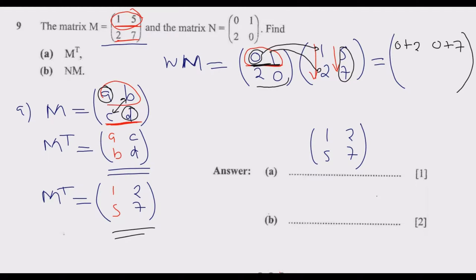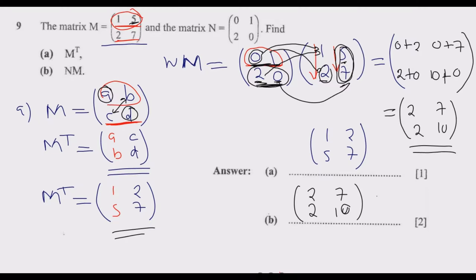Now for the second row: 2 multiplied by 1 is 2, plus 0 multiplied by 2 is 0. Then the second row with the second column: 2 times 5 is 10, plus 0 times 7 is 0. Then we simplify: 0 plus 2 is 2, 0 plus 7 is 7, 2 plus 0 is 2, and 10 plus 0 is 10. So we end up with the matrix (2, 7; 2, 10). This is how you answer this question to get the 3 marks.